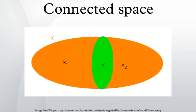However, if their number is infinite, this might not be the case. For instance, the connected components of the set of rational numbers are the one-point sets, which are not open. Let C be the connected component of x in a topological space X, and let B be the intersection of all clopen sets containing x. Then C ⊆ B, where equality holds if X is compact and locally connected.